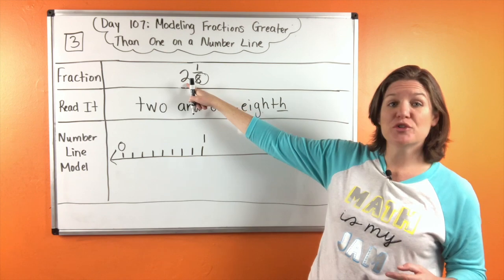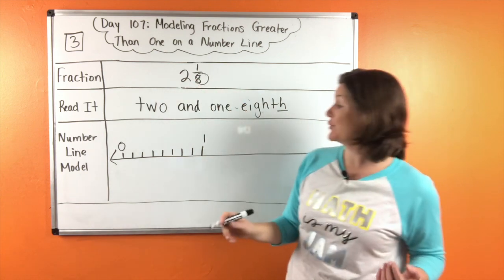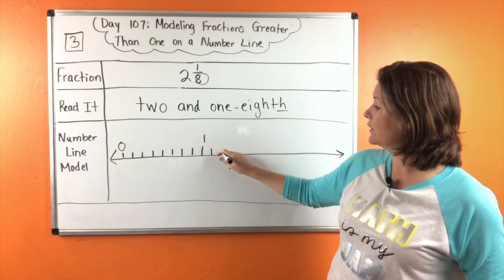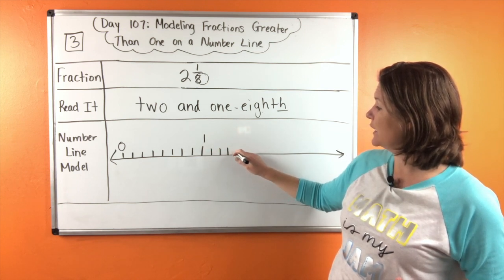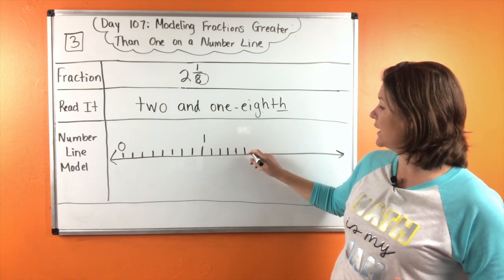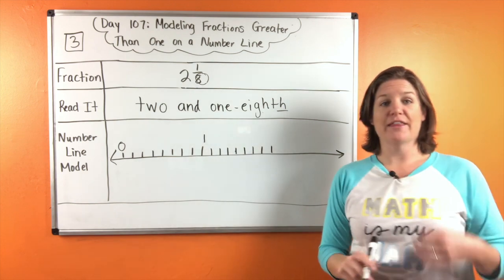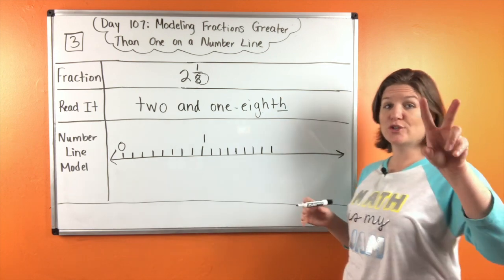But we need to get to the hole number two and actually go a little bit further, right? So another eight jumps. One, two, three, four, five, six, seven, eight. On that eighth jump, we have the hole number two.